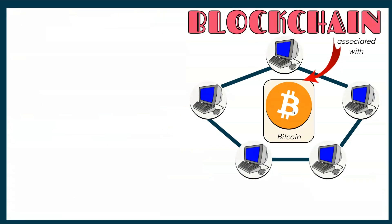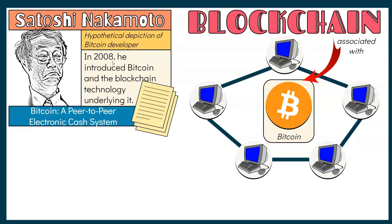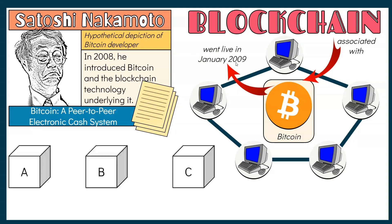Blockchain is often associated with the cryptocurrency Bitcoin, which relies on this underlying technology. Bitcoin was introduced in 2008 when the pseudonym Satoshi Nakamoto published the white paper 'Bitcoin: A Peer-to-Peer Electronic Cash System.' Nakamoto's identity remains unknown, and it's unclear if they are an individual or a group. The Bitcoin software and network launched in January 2009, with the creation of the first block known as the Genesis Block.